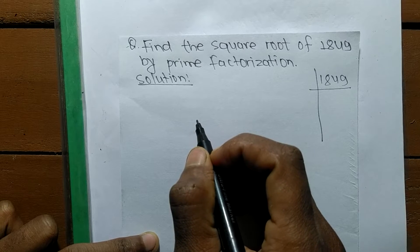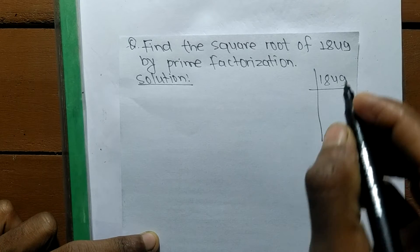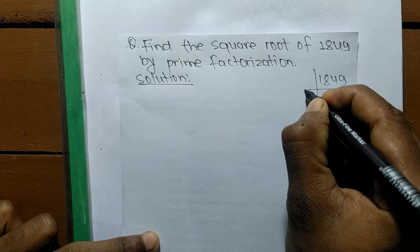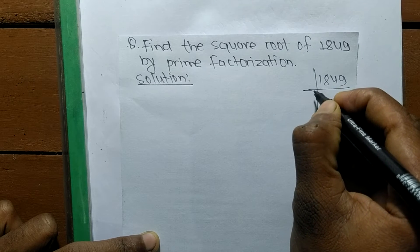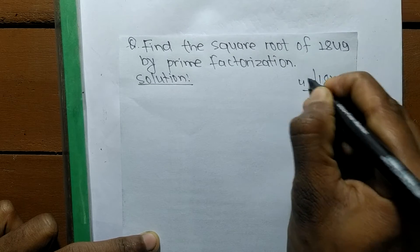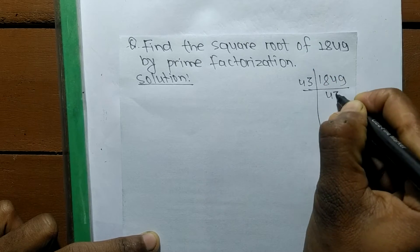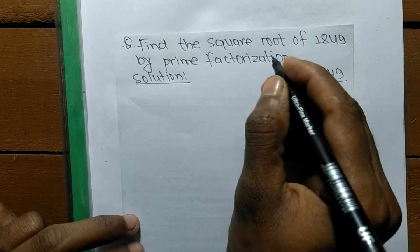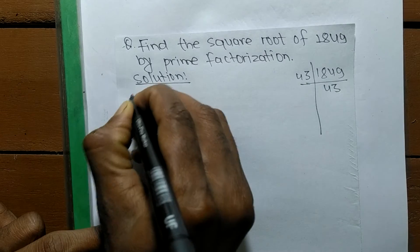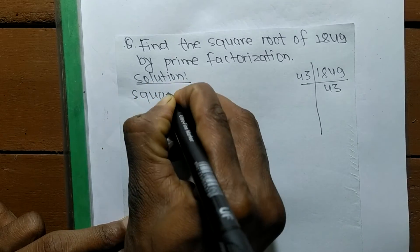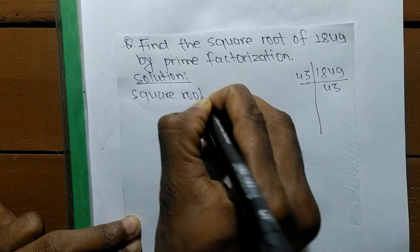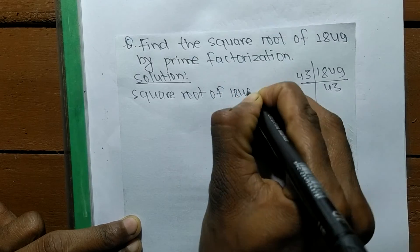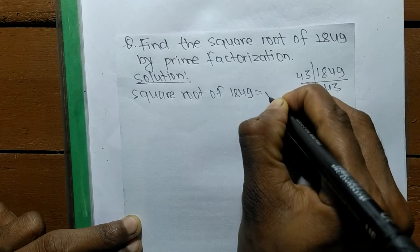The given number is 1849. The prime factors of 1849 are 43 times 43. Now we are finding the square root, so the square root of 1849 is equal to...